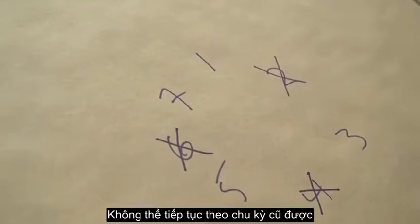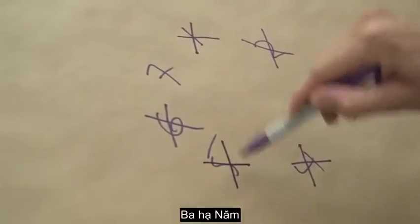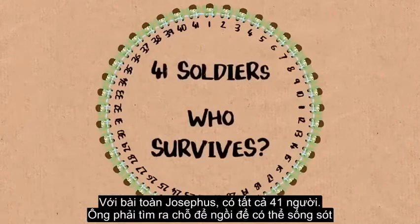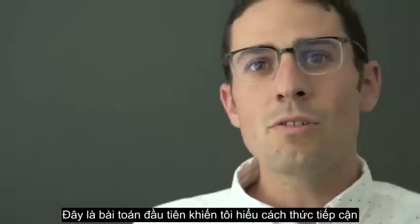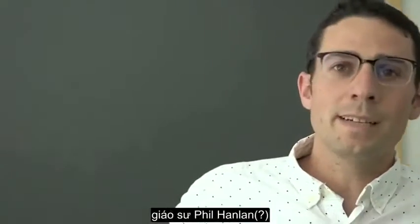And the story, at least the story I was told, I'm not sure this is historically accurate, was that Josephus preferred capture to suicide but he worried that if he said this the other soldiers would turn on him. And so he wanted to figure out where should he sit within this circle in order to be the last man living and then he would surrender rather than kill himself. That was the problem.